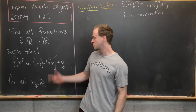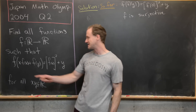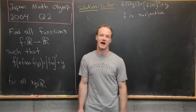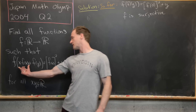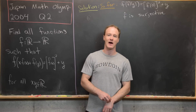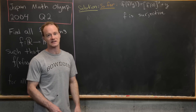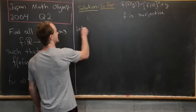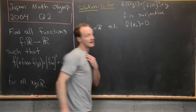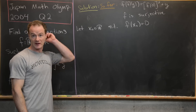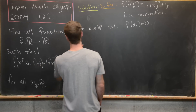To recap: we plugged x=0 into the functional equation to get f(f(y)) = f(0)² + y. Now the next step is to set x equal to the pre-image of 0 — call it x₀ — so that f(x₀) = 0. That pre-image is guaranteed to exist because we just showed f is surjective.